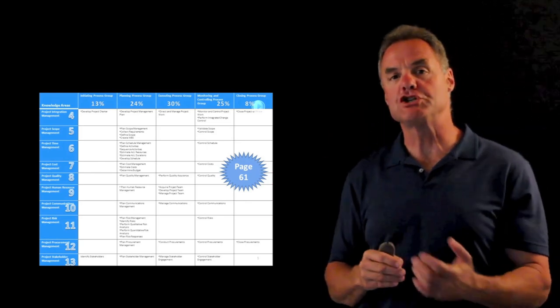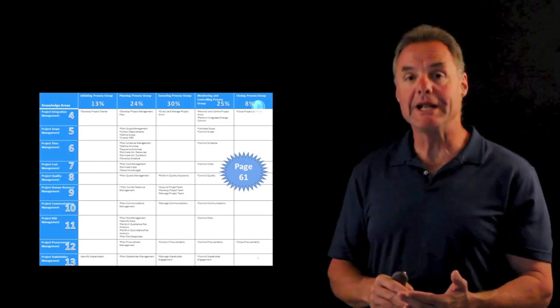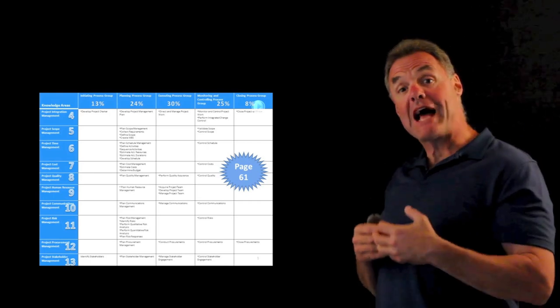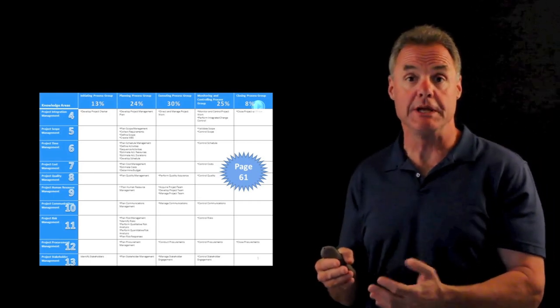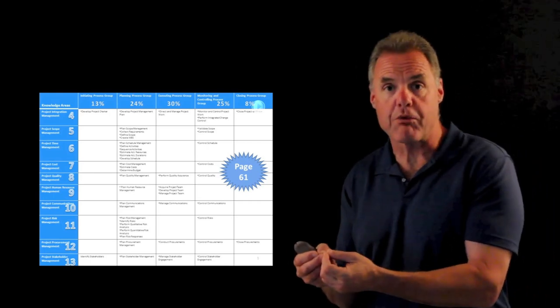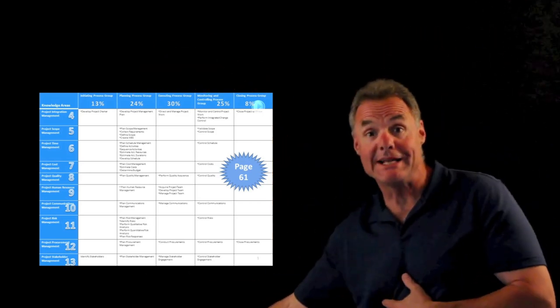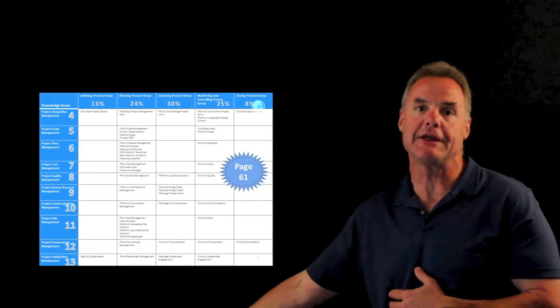So if you read the PMBOK Chapter 4, you're reading about integration management from A to Z. But if you have to actually apply project management in actual practice, you actually get your charter first, then you identify your stakeholders, which is all the way down to Chapter 13.